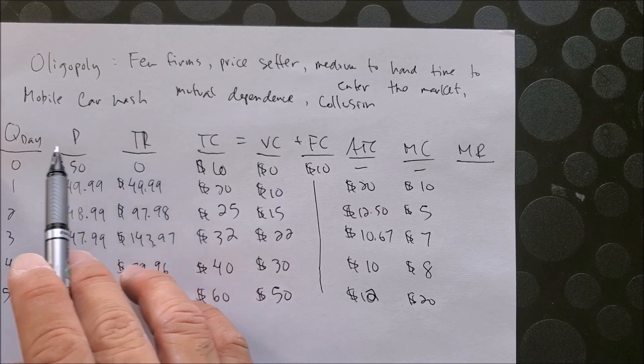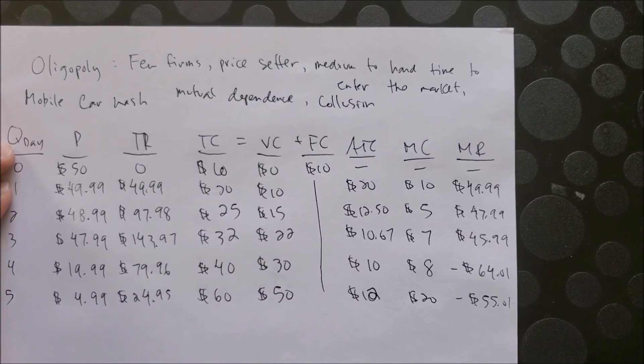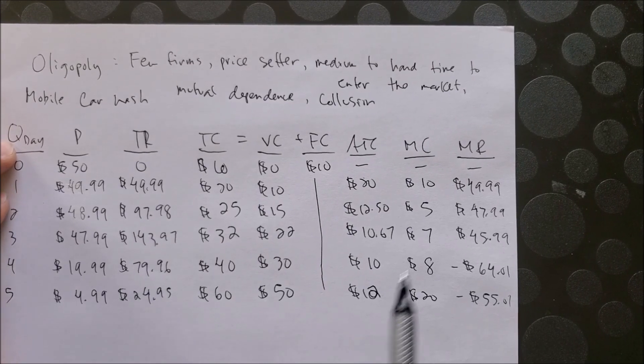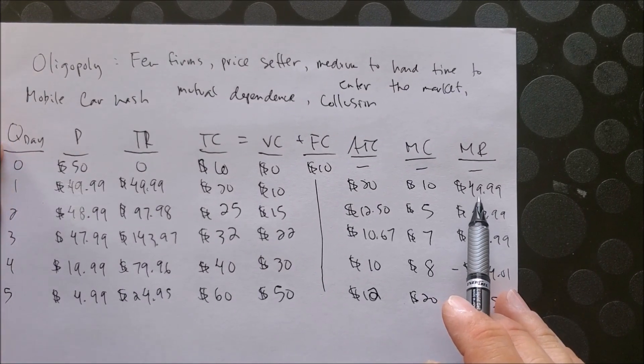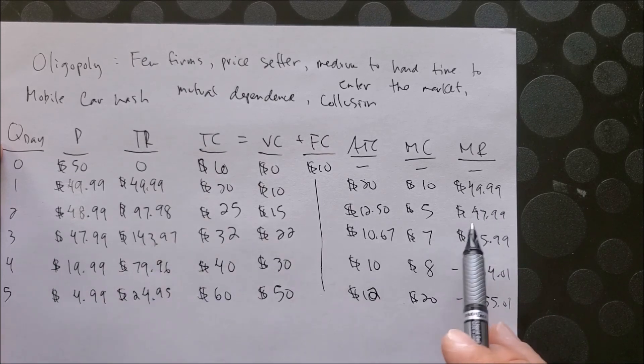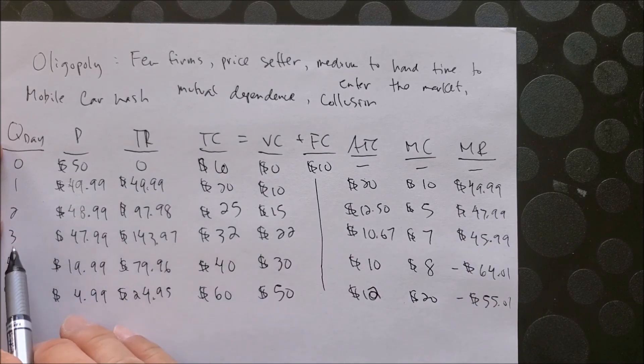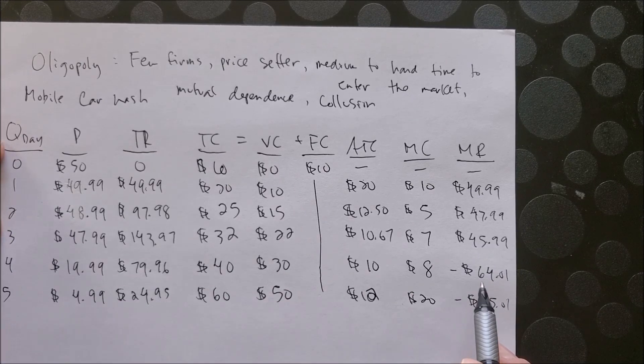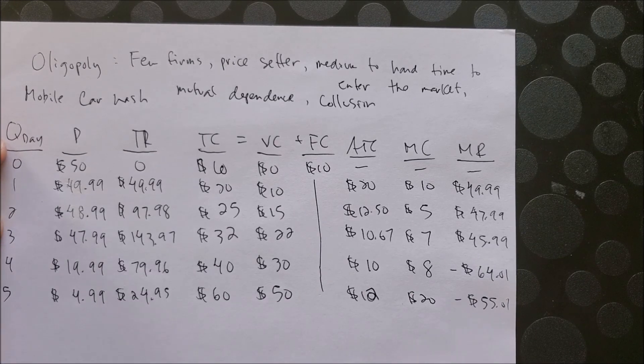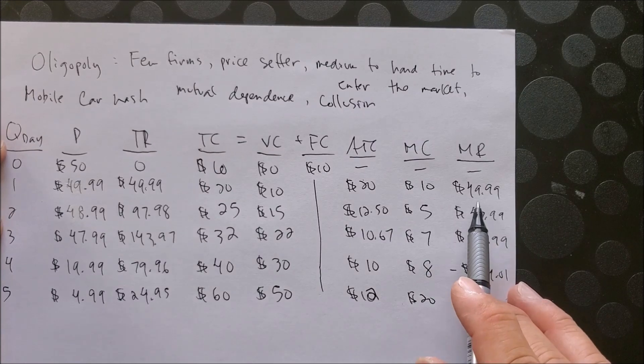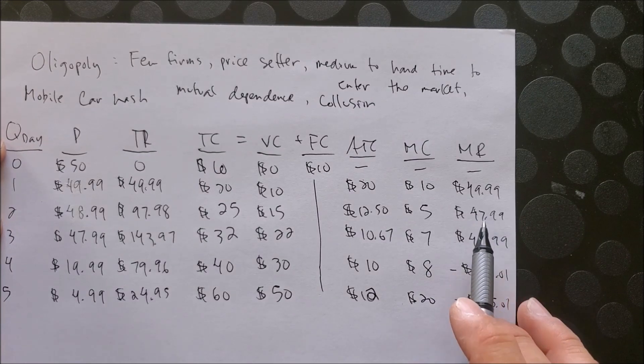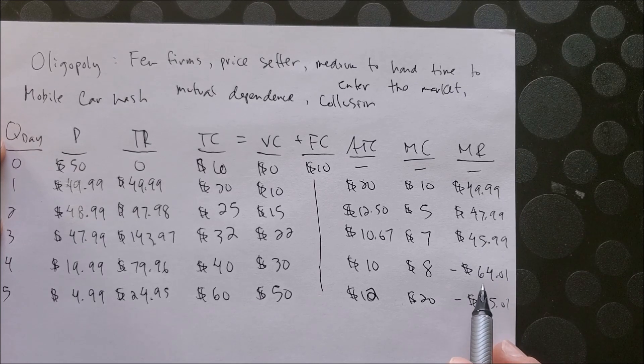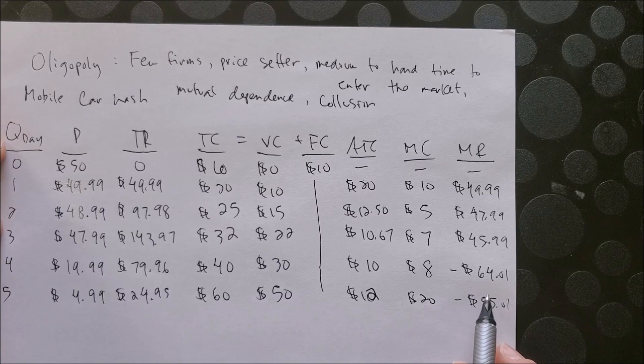Now that we have our MR, we can look at the marginal revenue: $49.99 for one, $47.99 for two, $45.99 for three, and for four and five we now have a negative number. So when we're going to wash one more vehicle, this is how much in revenue we could expect to earn, and it would be normal to see a negative MR in most businesses.